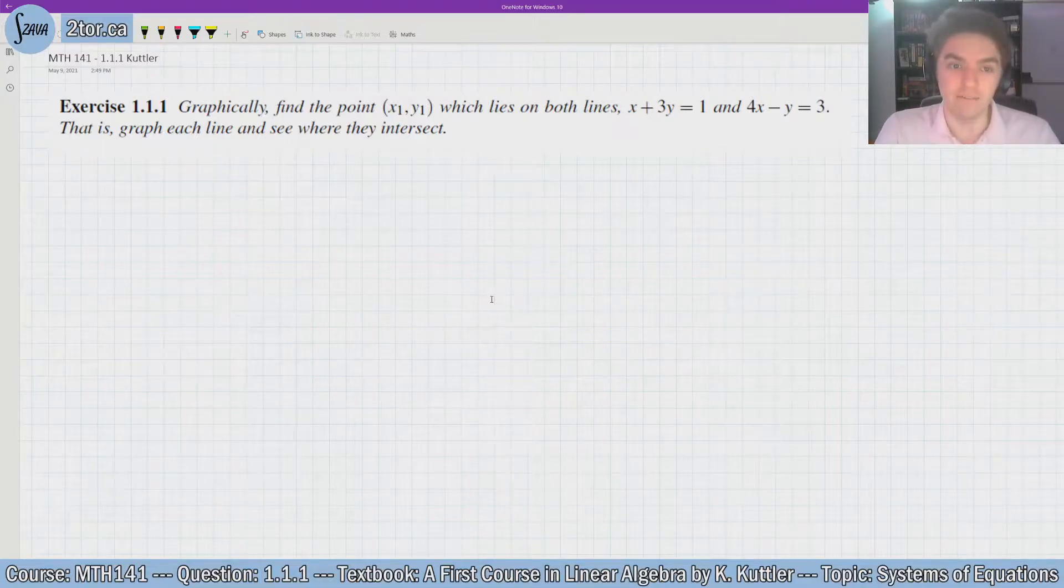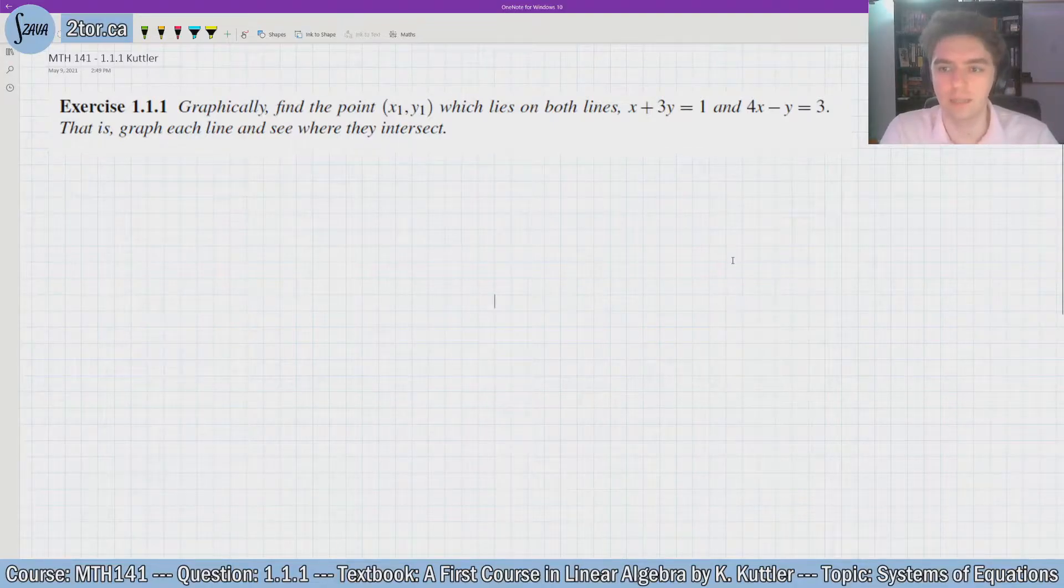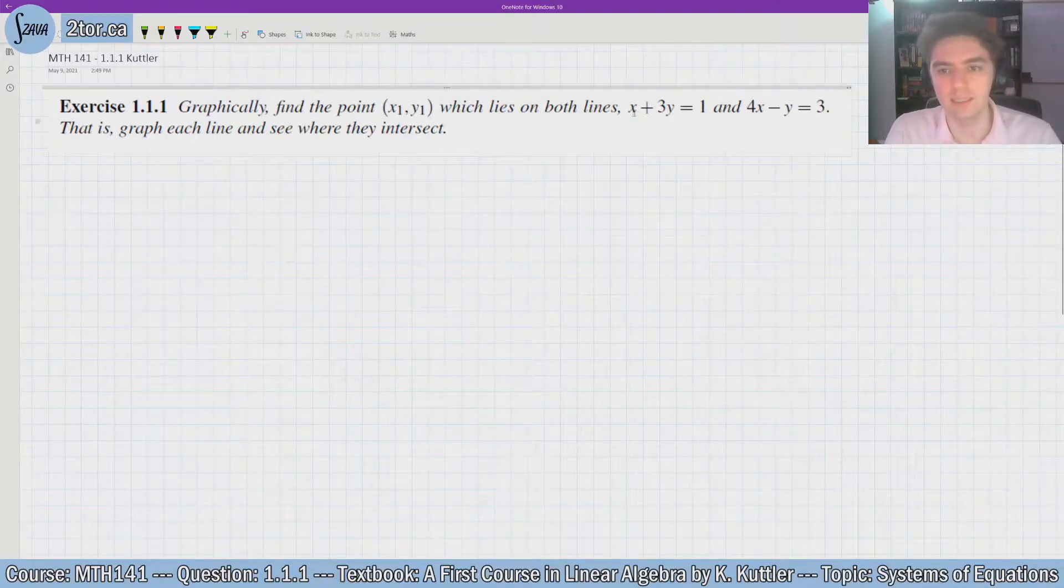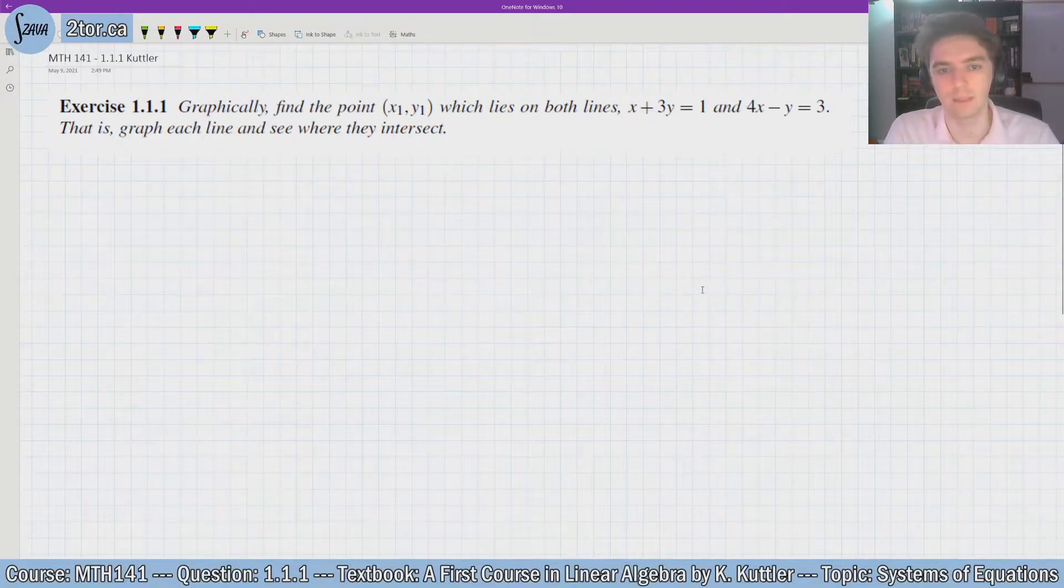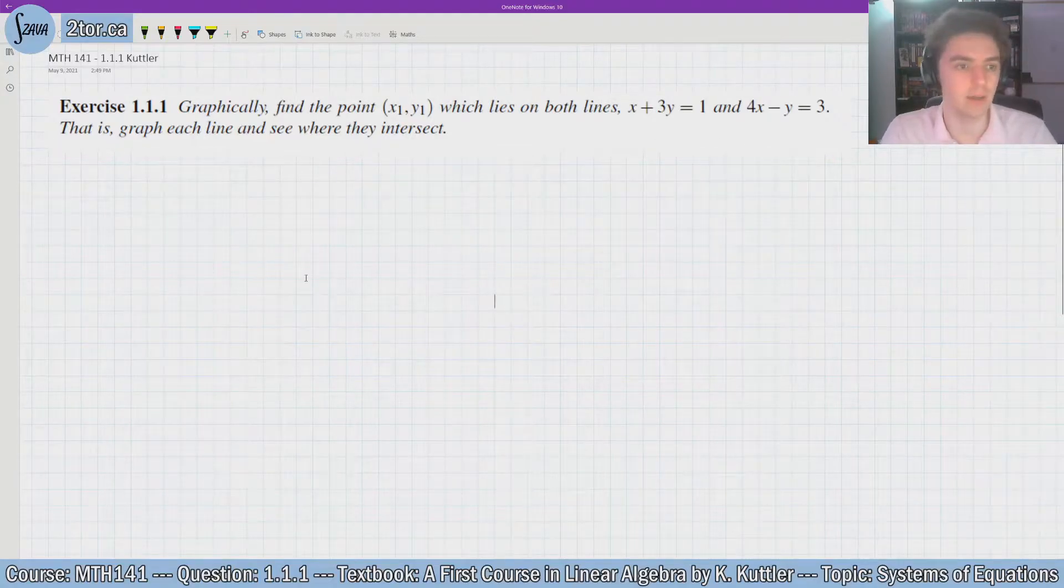So graphically find the point (x₁, y₁) which lies on both lines x + 3y = 1 and 4x - y = 3. That is, graph each line and see where they intersect. Okay, so we're looking for the solution to this system of equations, two equations and two unknowns x and y. Each of these equations represents a line if you were to graph it, so let's actually graph it.